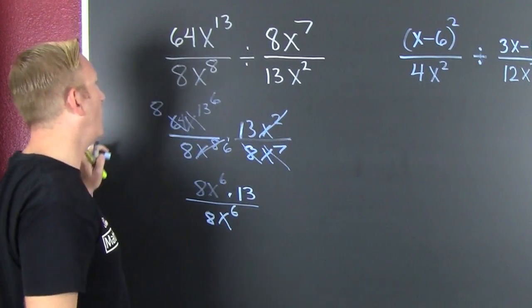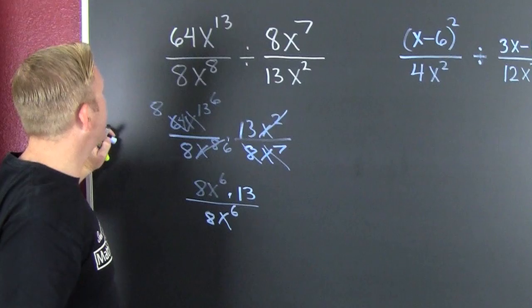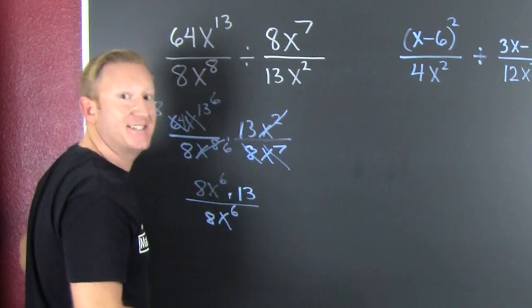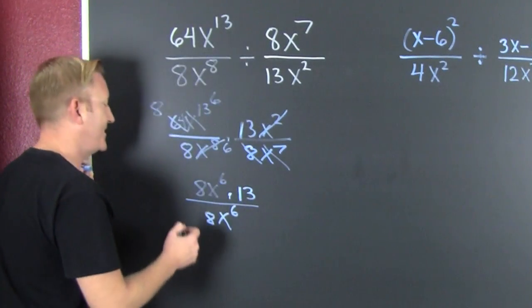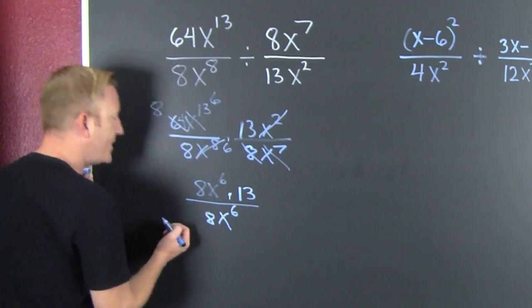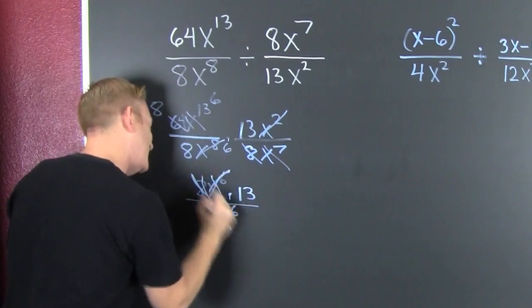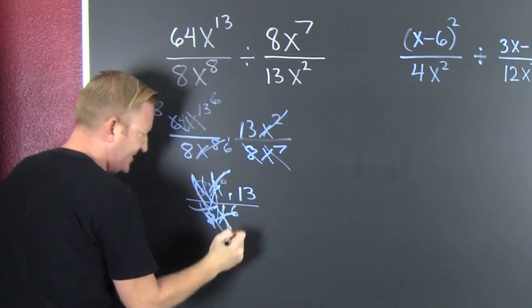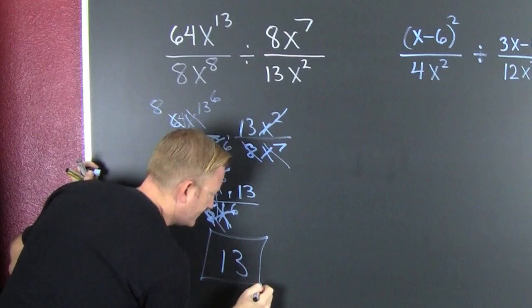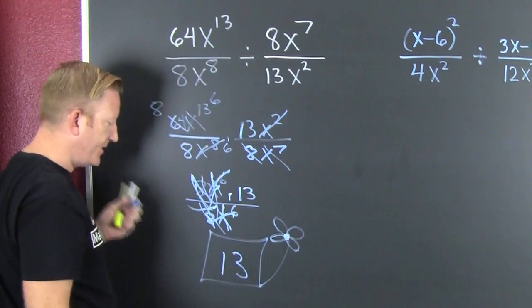Did that just happen? 8 and 7 is... that just happened. Reduce everything else. 13, gangster. What's next?